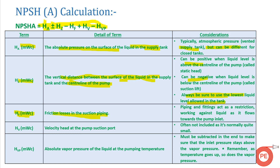The next term is HV — velocity head at the pump suction port. Generally this value is very small and most designers neglect it; they don't even calculate it while determining the net positive suction head.